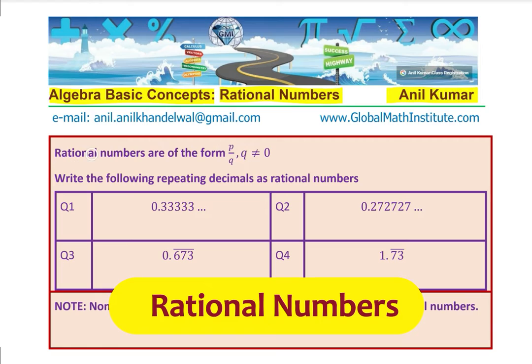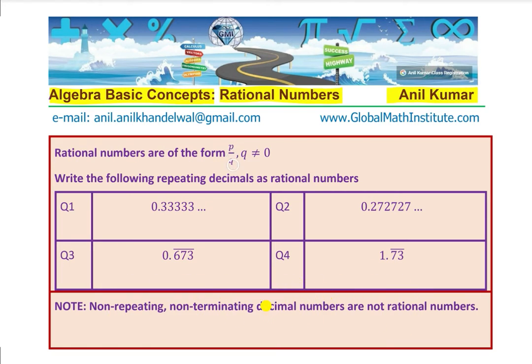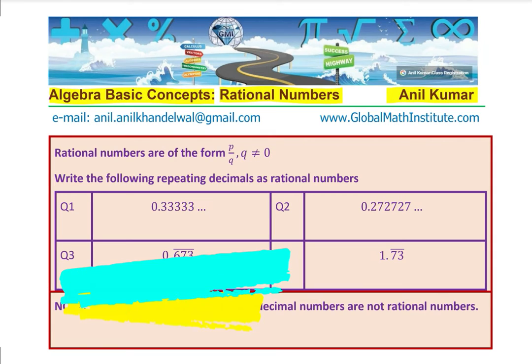As you know, rational numbers are of the form P over Q where Q is not equal to zero. Like fractions, we can write all the numbers that can be expressed like this as rational numbers. Numbers which we cannot write like this will be irrational numbers.